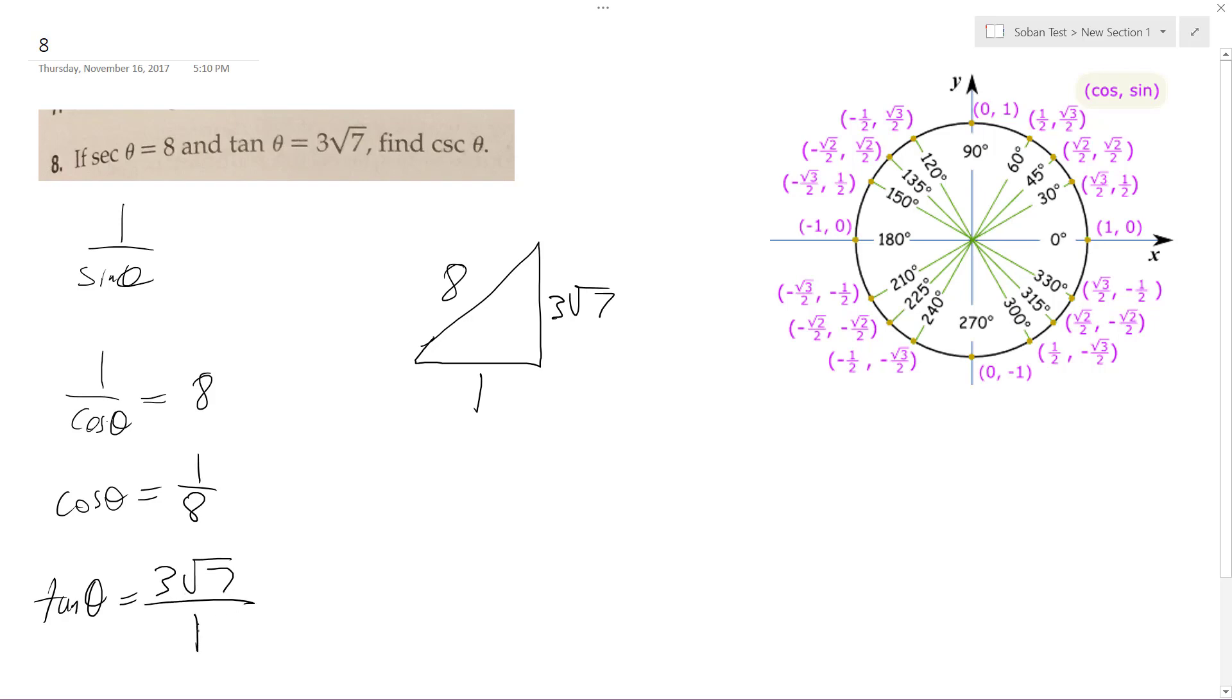So opposite over adjacent, so that's why I got the 1 there, so that matches up opposite over adjacent. Alright, so we want to find the cosecant theta, which is equal to 1 over sine theta.